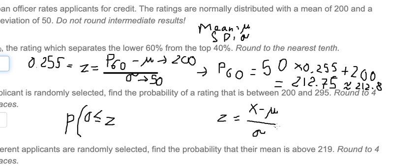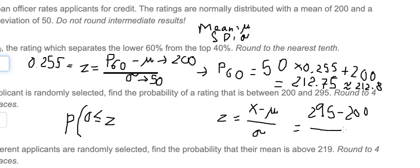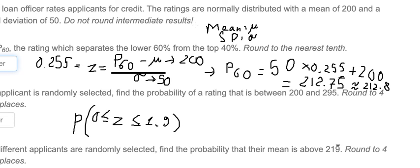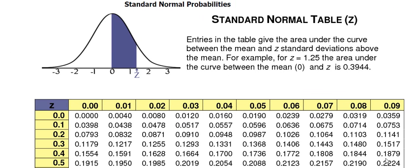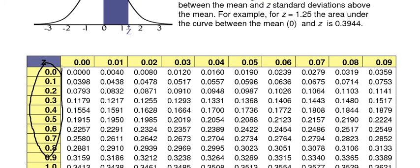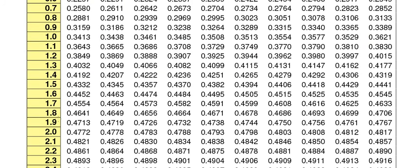For 295, we put 295 as x, the mean as 200, and sigma as 50 in the z-formula. So we can find the z-value. We get z = 1.9. We want to find the probability of z between 0 and 1.9, so we use the z-table to find z equals 1.9.